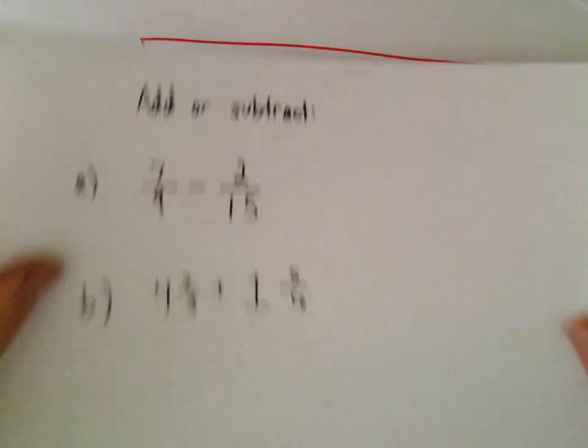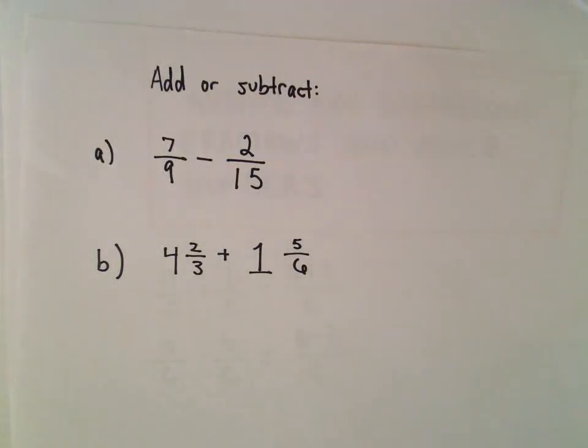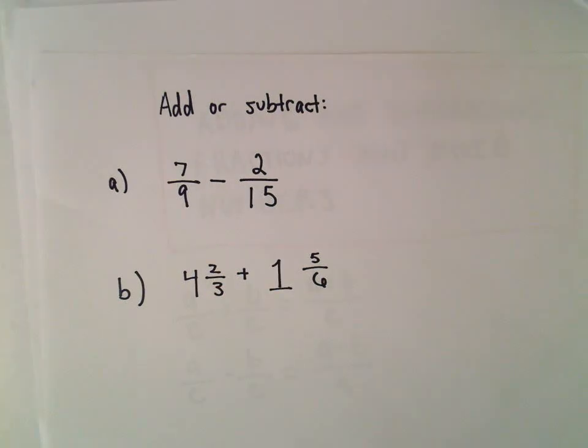All right, so another couple examples here of adding or subtracting fractions. So in part A here, we've got 7 over 9 minus 2 over 15.